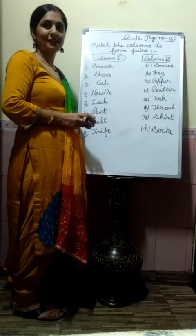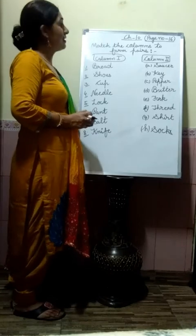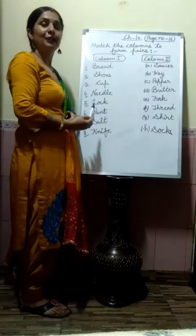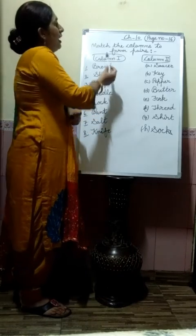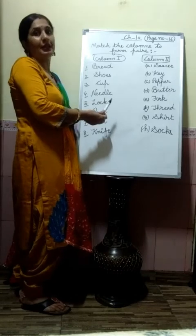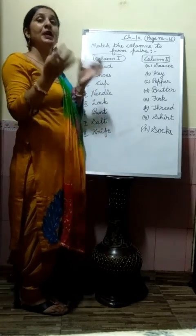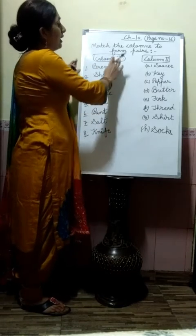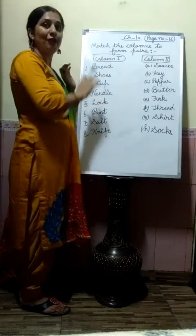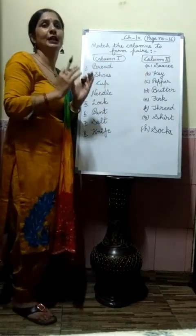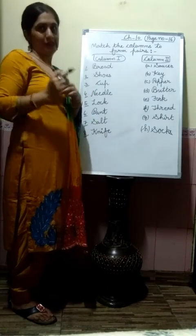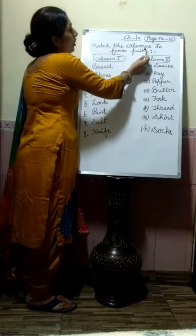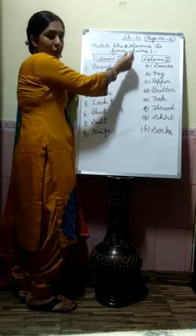Dear students, now we will start Chapter 10, and Chapter 10 is on page number 16 in your textbook. Here, compound words are given. We will read that type of words. There are two columns — column one and column two — and we have to make the pair. Match the columns to form a pair.